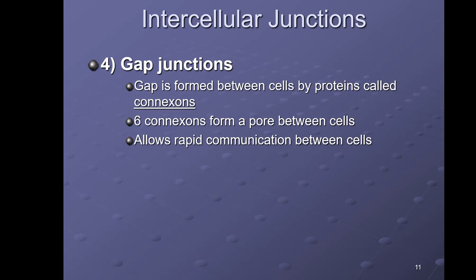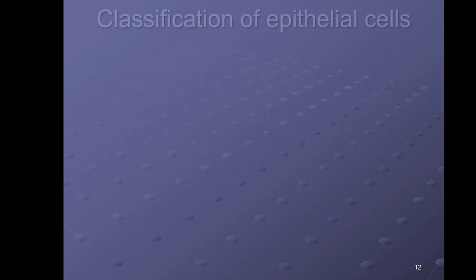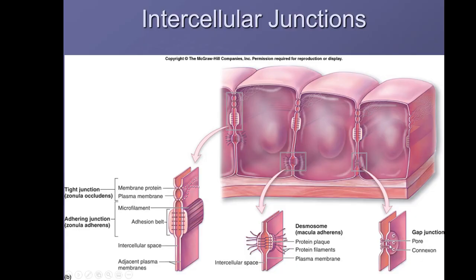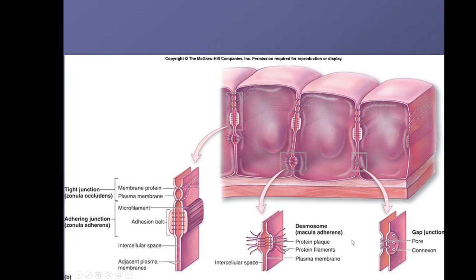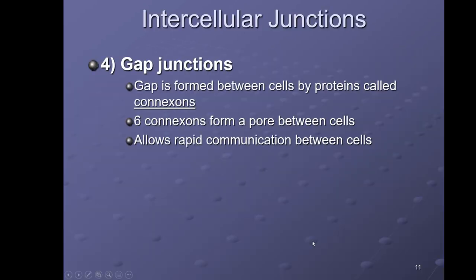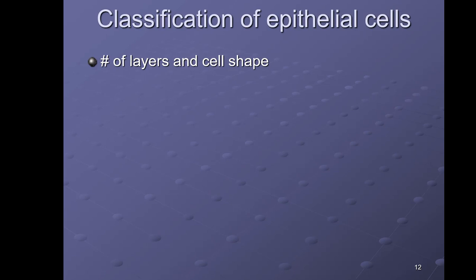Gap junctions form a gap between cells using proteins called connexons. Six connexons form an opening between two adjacent cells, and this allows the cells to rapidly communicate with each other. You find gap junctions where you want cells to work closely together — a great example is the heart, where cells need to contract at the same time. In the close-up image you can see the six connexon proteins forming the gap junction, allowing substances to flow from cell to cell.